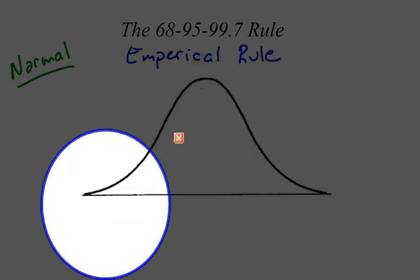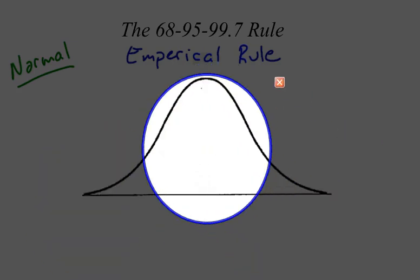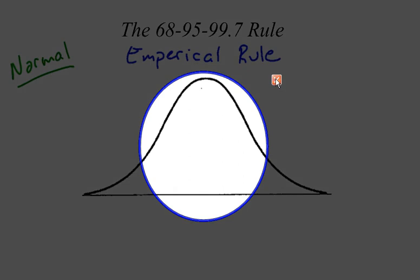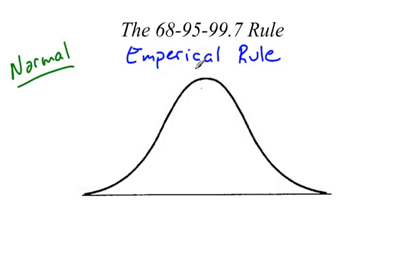Down here, not a whole lot of data. Over here, not a whole lot of data. Right here, a lot of data. So, how does this 68-95-99.7 rule work?